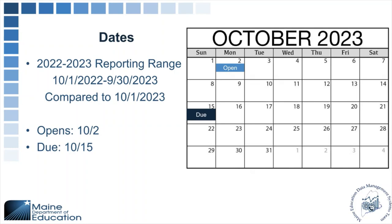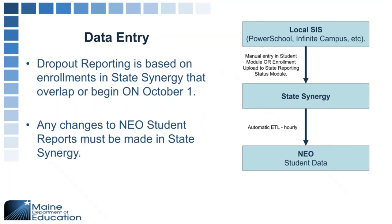The reporting range looks at enrollments for 2022 to 2023 compared to enrollments on 10-1. This report opens on October 2nd and is due on the 15th of October. Dropout reporting is based on enrollments in State Synergy that overlap October 1st — they have to begin on or overlap October 1. Any changes that need to happen to a NEO report must be made in State Synergy via manual entry in the student module or an enrollment upload to the State Reporting Status module. An automatic ETL hourly will then upload the reports in NEO student data.